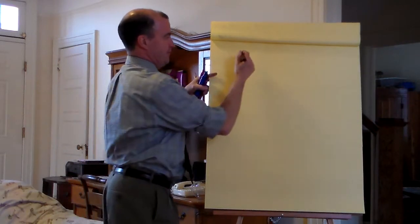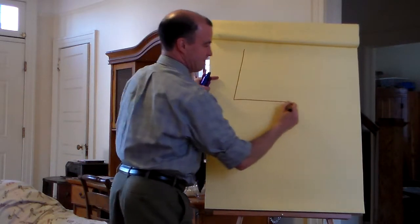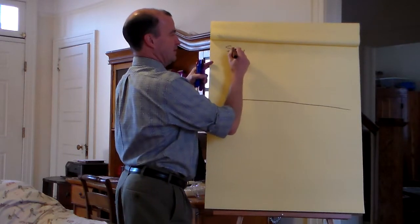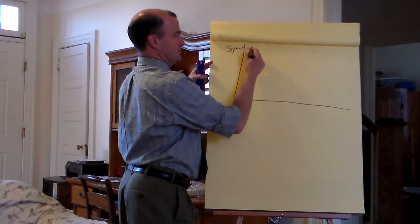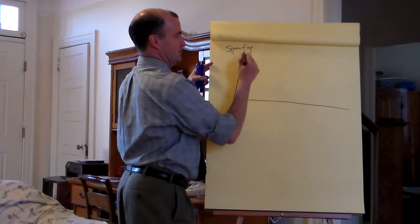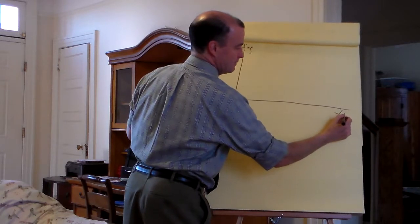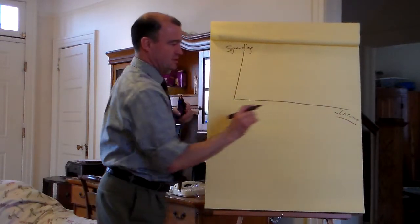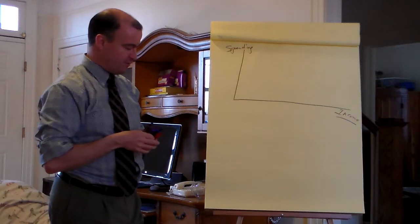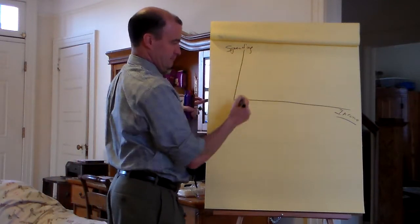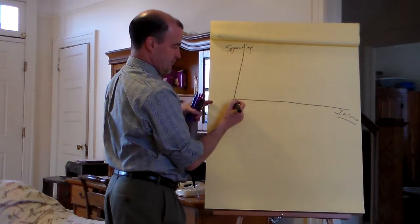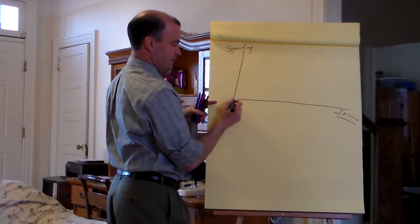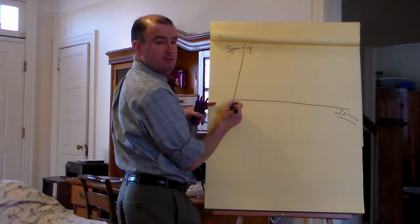Okay, here comes the picture. The vertical axis is Spending, the horizontal axis is Income. A 45-degree line goes on that angle that bisects the 90-degree angle, starting from the origin.